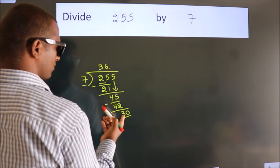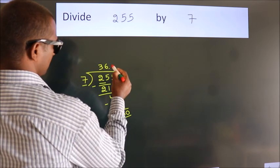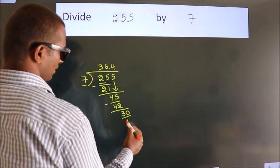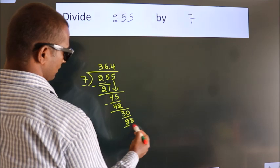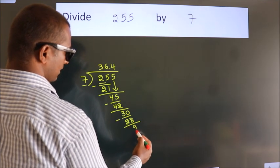A number close to 30 in 7 table is 7×4, 28. Now we subtract. We get 2.